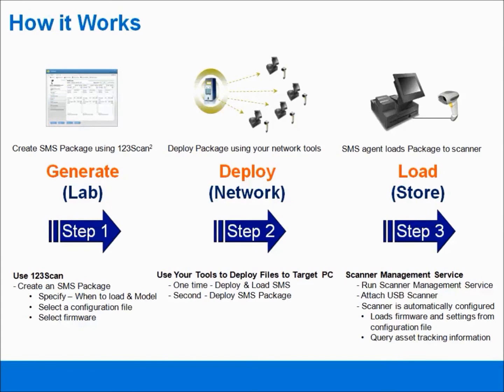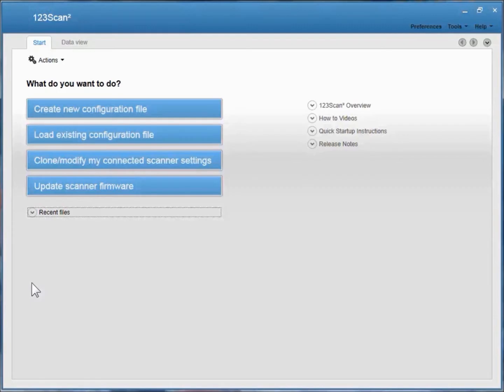There are three steps to using the Scanner Management Service. Generating an SMS package is generally done in a lab and is the first step of the three-step process. Now let's use 123SCAN to generate an SMS package.